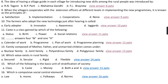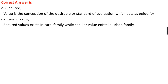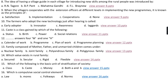Question number fourteen: Which value exists in rural family? Option A, secure; option B, secular; option C, rigid; option D, flexible. The right answer is option A, that is secure. Value is a conception of a desirable standard of evaluation which acts as a guide for decision making. In the case of rural family, there is always a fixed value — that is, secured value. Secular value exists in urban families, which accept changes as well.